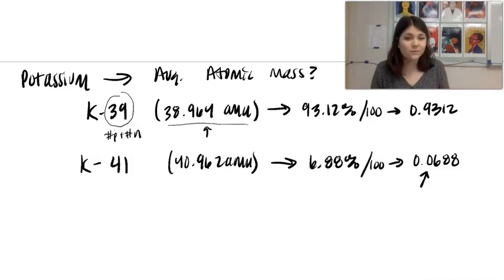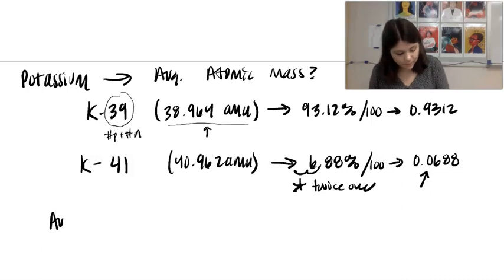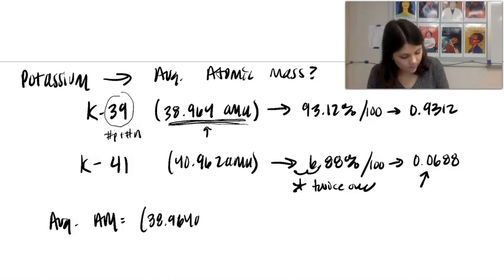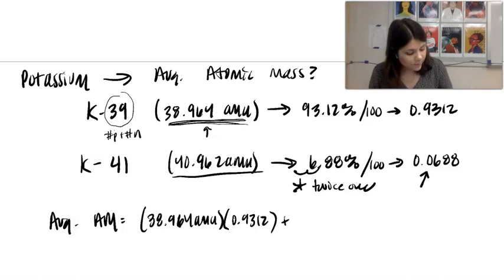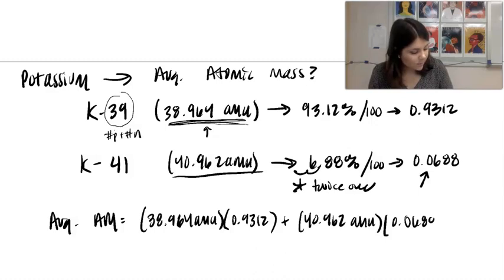If you don't want to divide in your calculator, you just have to move the decimal twice over. So here, let's do our calculation. So I'm going to take the mass of the first one, multiply it by the relative abundance.